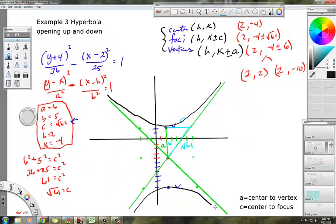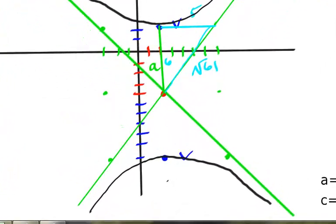The foci, which I didn't graph, you would have to kind of figure out what exactly radical 61 is, and you can do that. But it would just be up here somewhere and down here somewhere. And that's it.